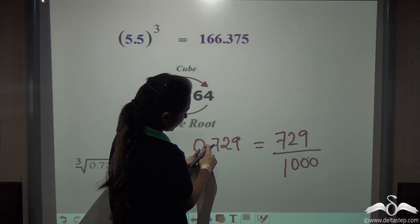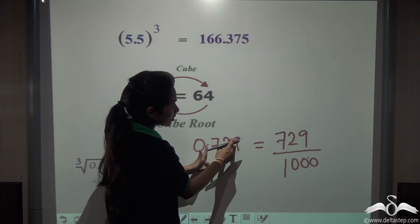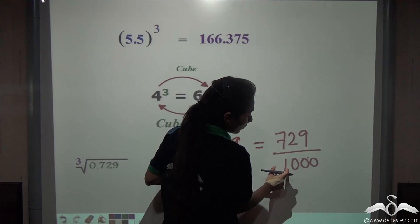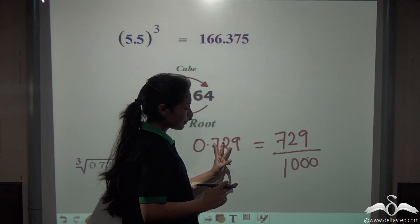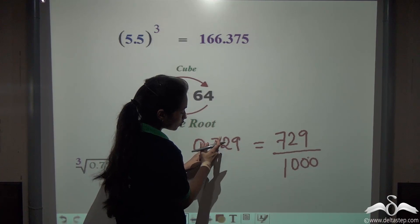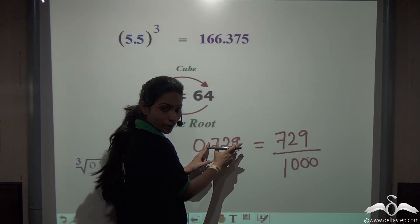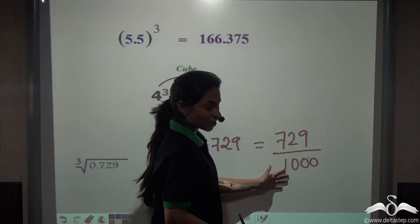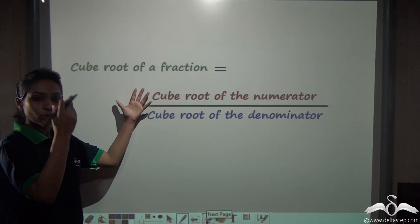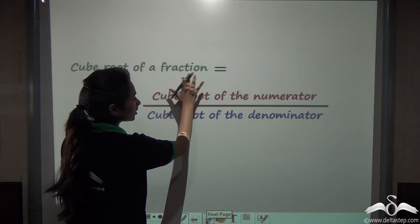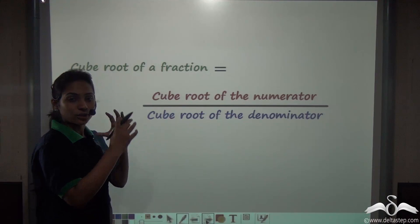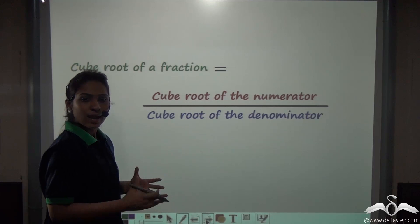The decimal point is placed before three digits — counting one, two, three — so when converting to a fraction, write 1 in the denominator followed by the same number of zeros as there are digits after the decimal point. Here there are three digits after the decimal, so we write three zeros, giving 729/1000. We know the cube root of a fraction is taken as the cube root of the numerator divided by the cube root of the denominator.